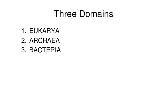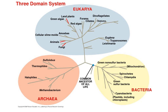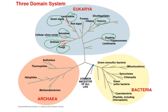The three domains used to classify all living organisms are Eukarya, Archaea, and Bacteria. The Eukarya domain can contain Animalia, Plantae, Fungi, Protista, and many others — examples include amoeba, fungi, animals, slime molds, green algae, plants, and diatoms. The Archaea domain contains only the Archaea kingdom, and the Bacteria domain contains only the Bacteria kingdom.